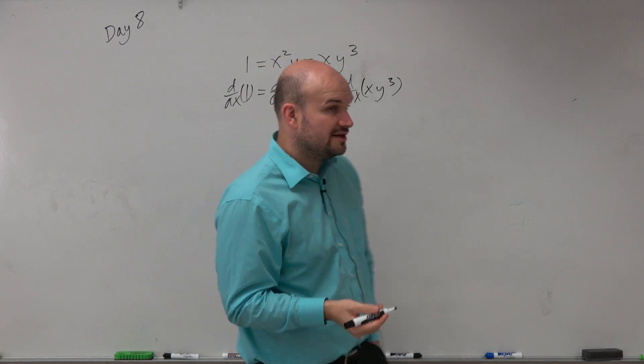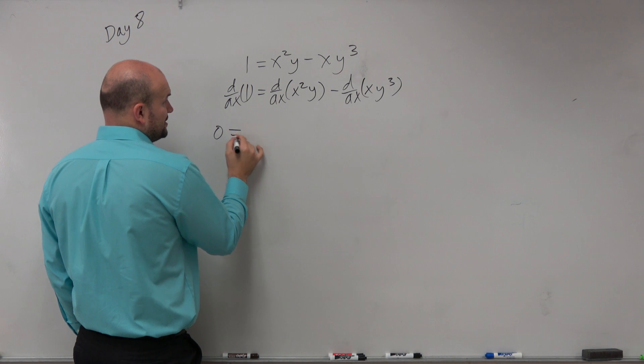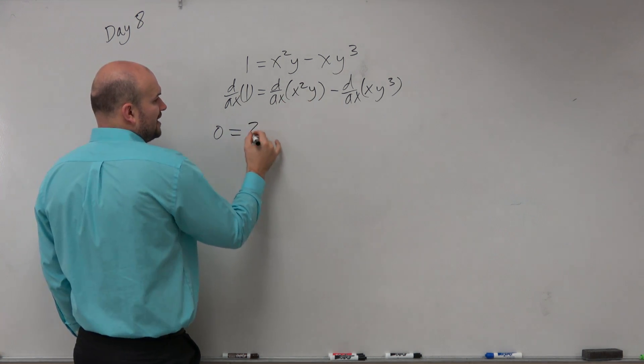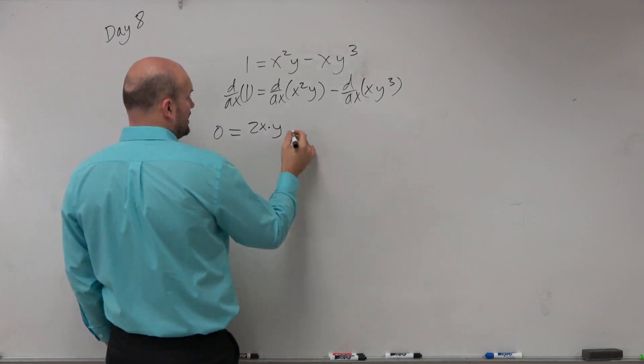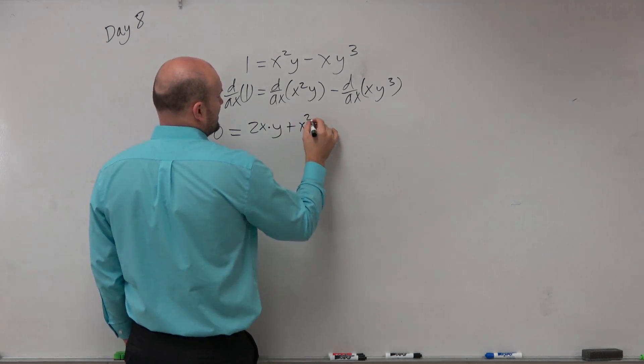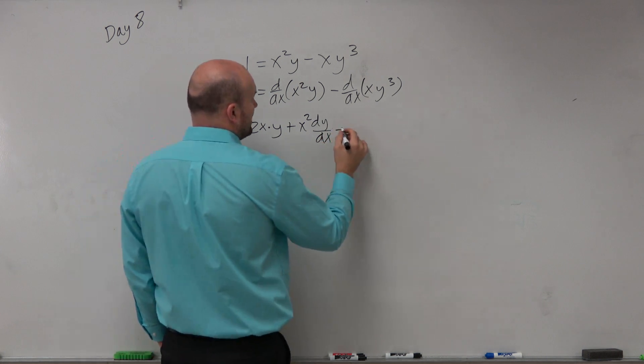And when I do that, you can see that I have to use the power rule. d/dx of a constant is going to be 0. Over here, I'm going to have 2xy plus x² dy/dx minus,